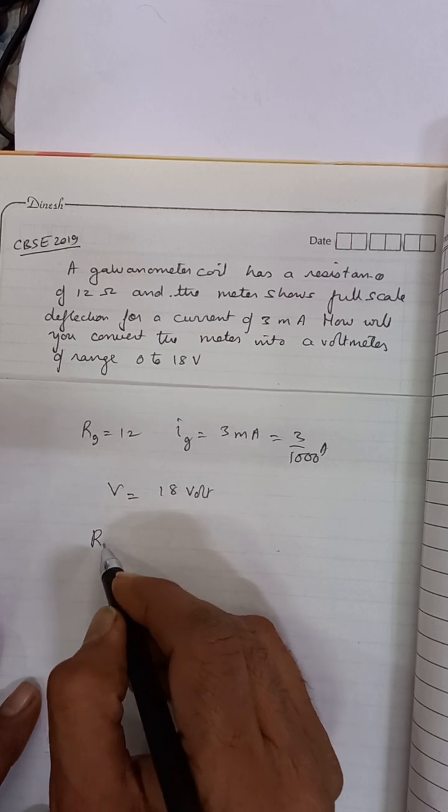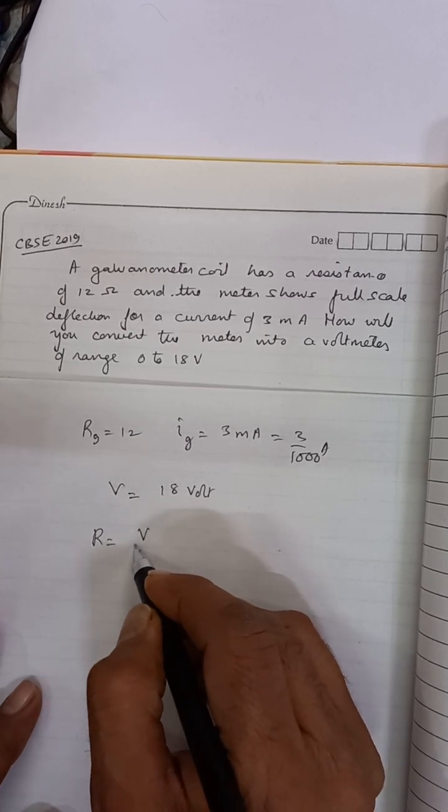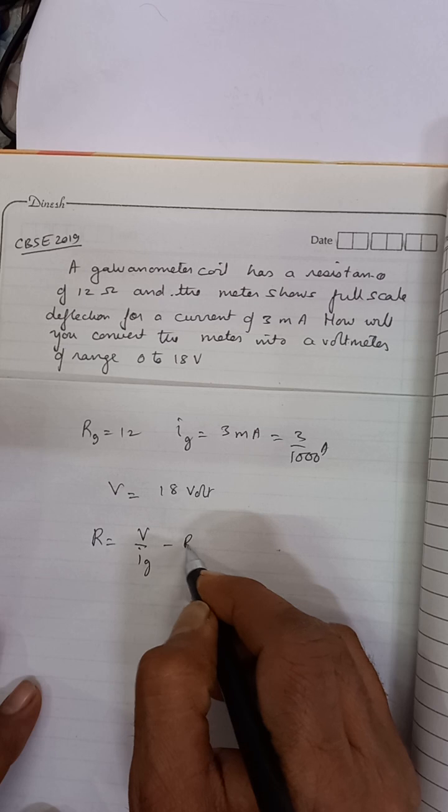So the resistance to be connected in series will be given by this formula: V upon IG minus RG.